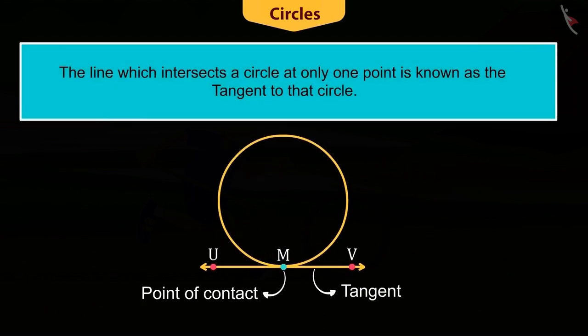Hence, we can say that the line which intersects the circle at only one point is known as the tangent to a circle.